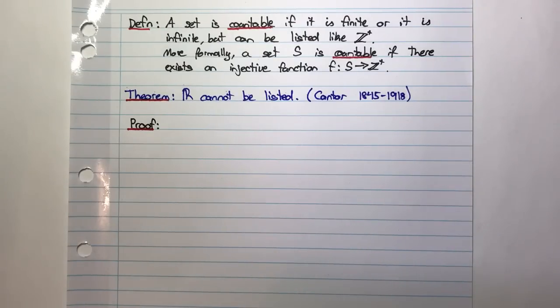In this video we're going to have a look at an amazing result which says that the real numbers cannot be listed, and then we're going to have a look at proving this. But before we do that, we're first going to either remind ourselves or maybe introduce this concept for the first time of a countable set.